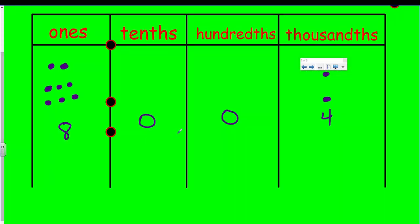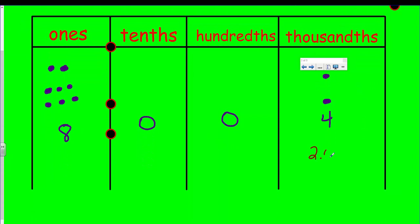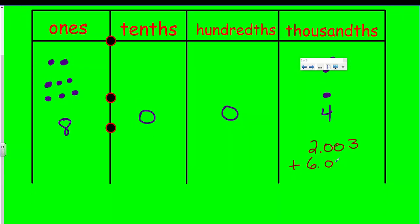What I can do here then is show you the method — the algorithm. The first one was two ones and three thousandths. Two ones, no tenths, no hundredths, and three thousandths. Adding to that, six ones and one thousandth — six ones, no tenths, no hundredths, and one thousandth. And when I add that, three plus one is four. I bring my decimal point directly down to keep all my units in the same place value column. And now I have eight and four thousandths. That's the algorithm — just the basic solving of the problem.